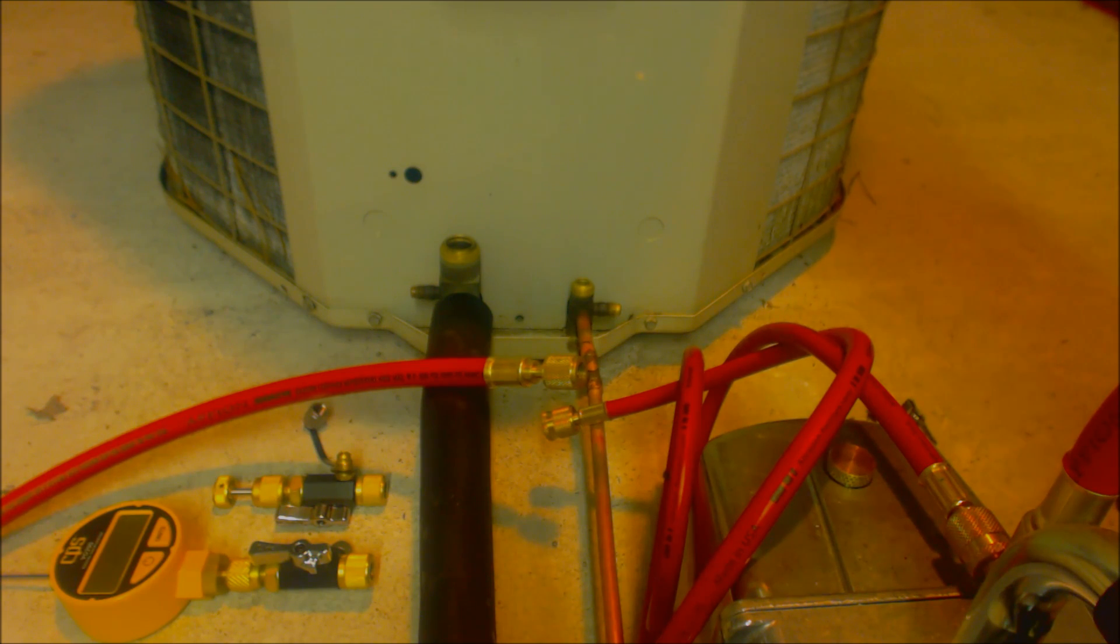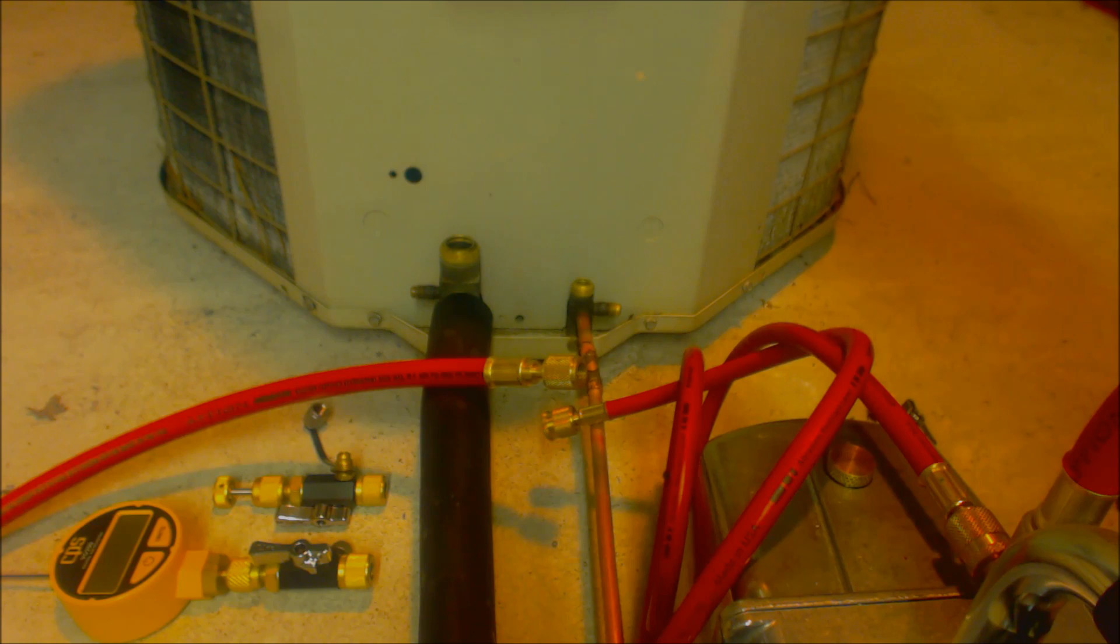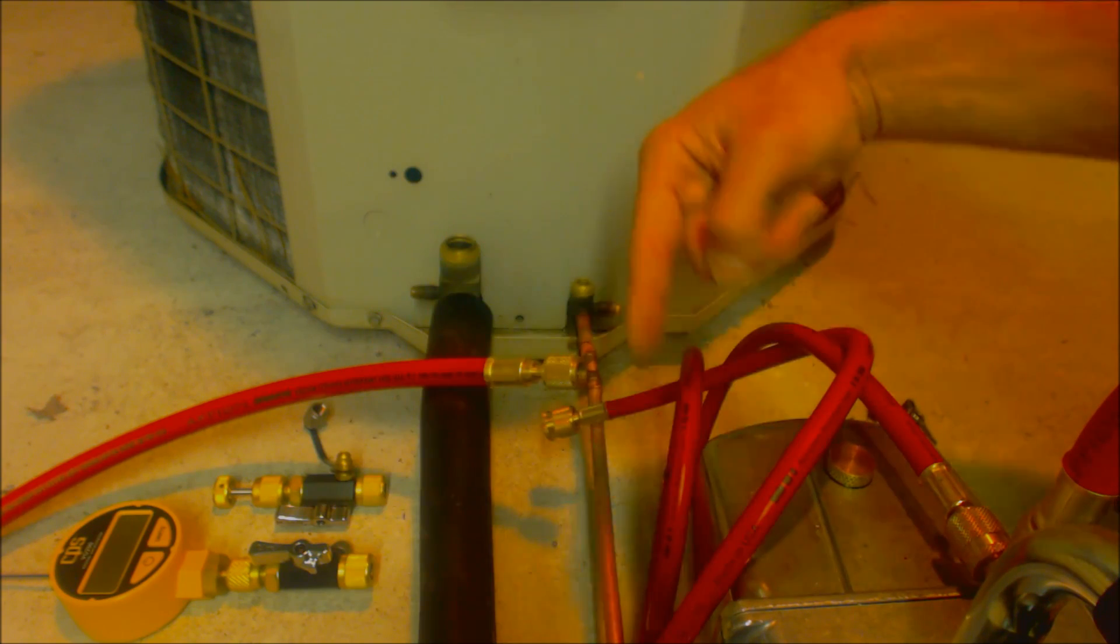On most mini split systems, the metering device is actually in the outdoor unit, so you'd only have to pull a vacuum from the one side, and most times the mini split manufacturers are only giving you a suction port, so that's okay. There is no metering device over at the wall units, so you can actually pull a vacuum from one side and pull all the way through to the other.